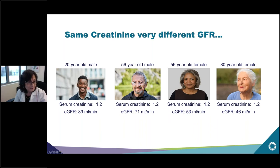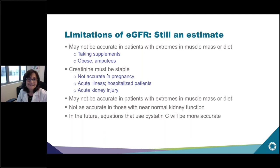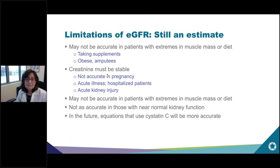These estimating equations, no matter how modified, have limitations — it's eGFR, estimated GFR, not precise. It can be inaccurate in patients with extremes in muscle mass or diet, such as people taking supplements, people who are obese, or people who have had amputations. Creatinine must be stable for these equations to be accurate at all, and they're known to be inaccurate in pregnancy, acute illness, or hospitalized patients where creatinine isn't stable.